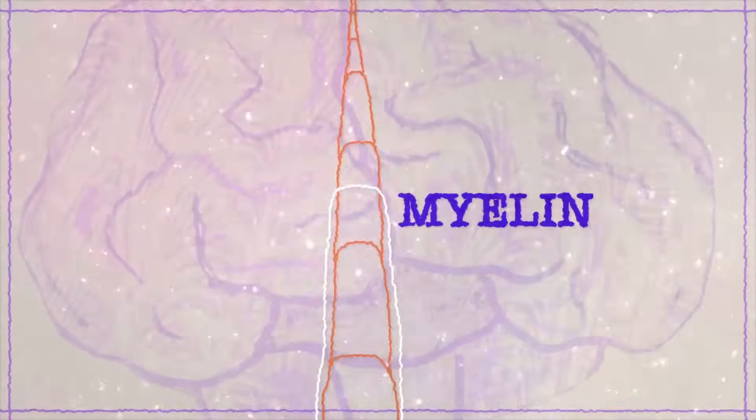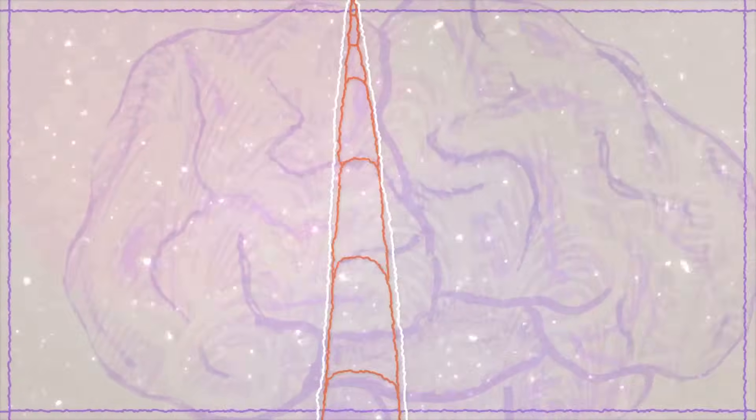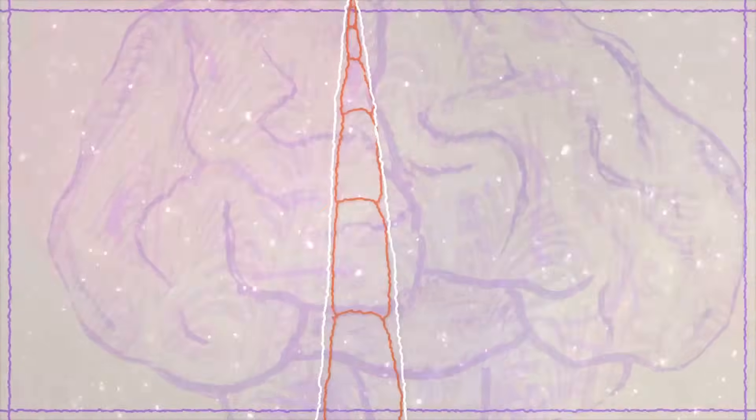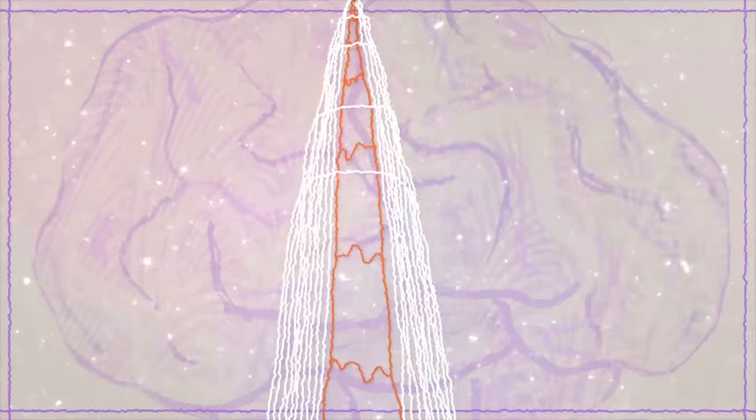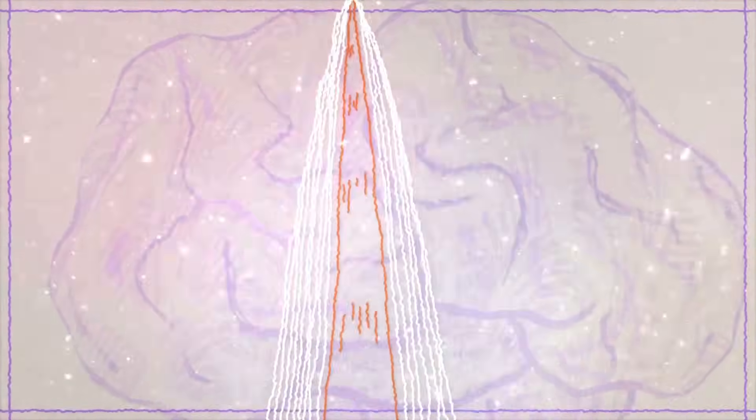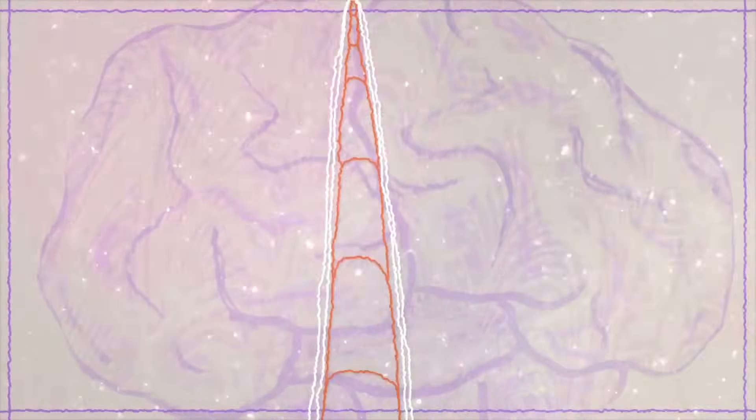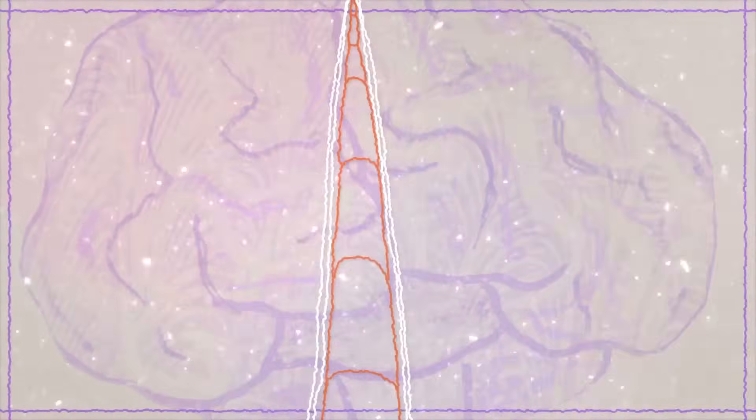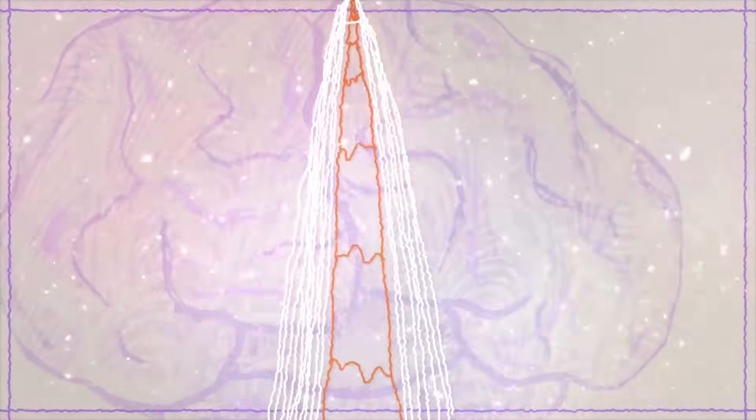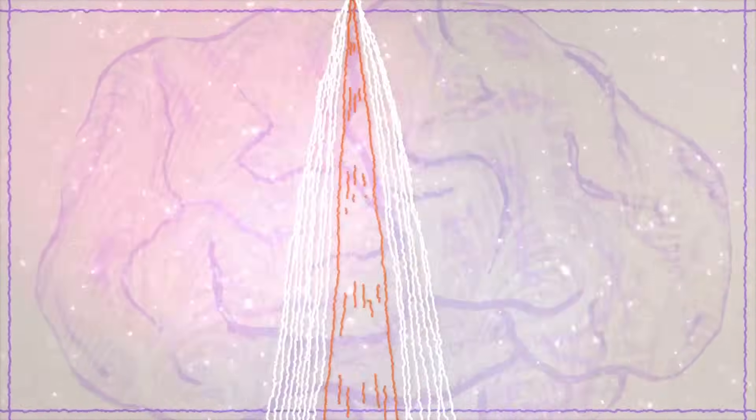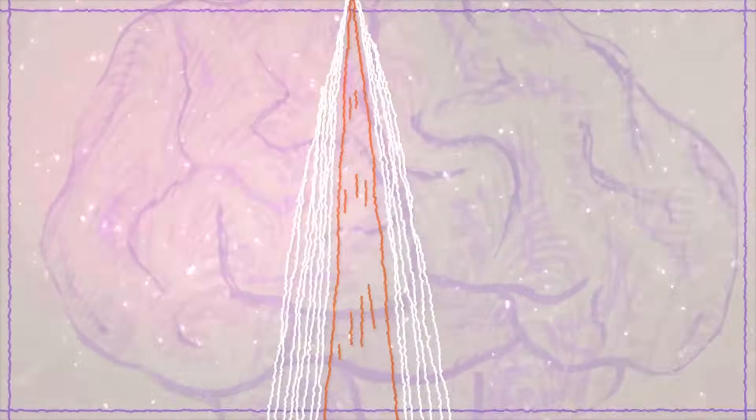Neural fibers are wrapped in a fatty substance called myelin. Myelin is an insulator, and speeds up the electrical signals zipping down the nerve fiber. Some neural fibers have as many as 100 layers of myelin. Others only have a few. And fibers with thicker layers of myelin can conduct signals 100 times faster, or more, than those with thinner ones.